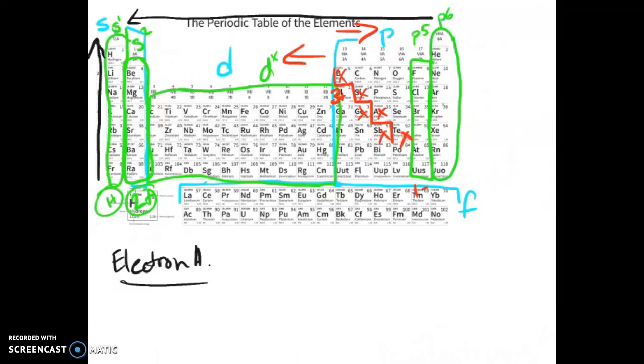Next trend that we will talk about is something called ionization energy. Now ionization energy is the energy required to remove an electron from a neutral atom. Its trend is similar to electron affinity in the fact that it does go up the further up the table that it goes. But instead it decreases as it goes right instead of going left.